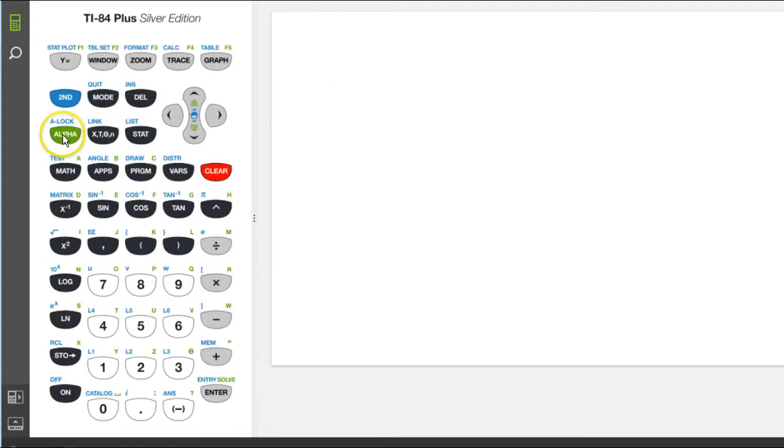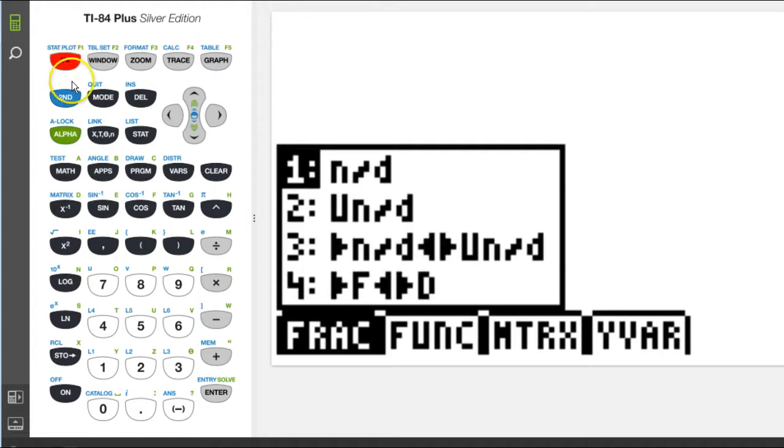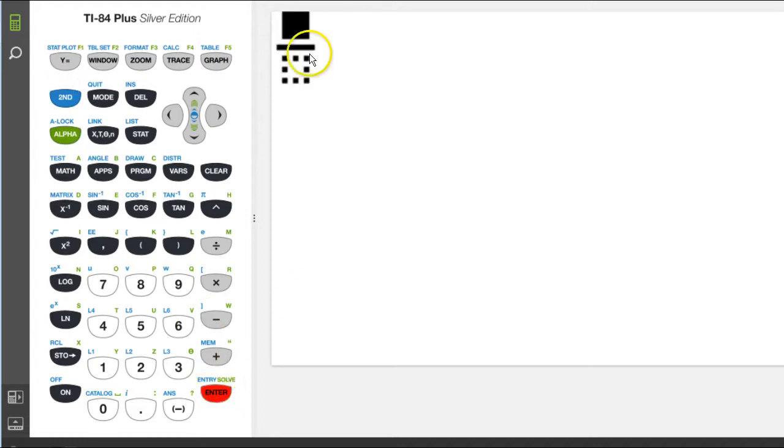I need a fraction, so I'm going to hit, I think I can hit alpha, and then the Y equals key, and enter. And that makes a fraction. I hit alpha, the Y equals key, and enter, and I've got my fraction ready.